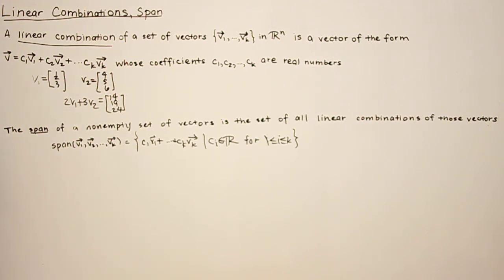Both linear combinations and spans are sets. And the span of any non-zero vector in R2 is represented by a line passing through the origin.